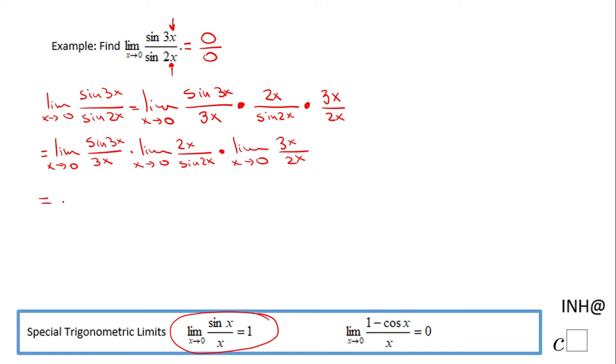And the first limit is 1 because it looks exactly like this. The only difference is we have 3x and 3x, but that's fine. The second one is also 1. It's the reciprocal of this limit, and the reciprocal of 1 will be 1. And the last one, if we cancel out the x, which we can do, we end up only with 3 over 2.